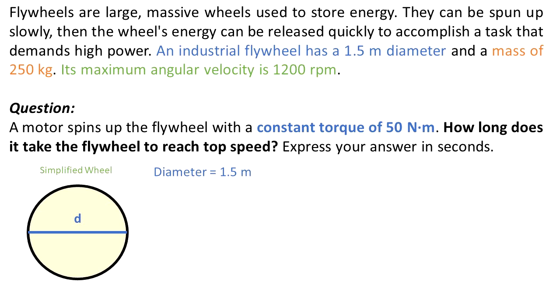From this question, we are searching for the time it takes this wheel to get to the maximum angular velocity of 1200 revolutions per minute. The diameter is 1.5 meters and the radius is 0.75 meters. The mass is 250 kilograms and the maximum angular velocity is 1200 revolutions per minute.